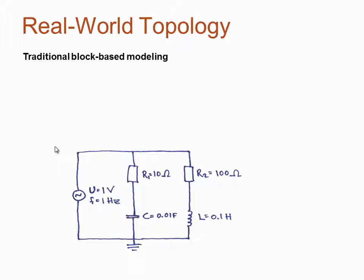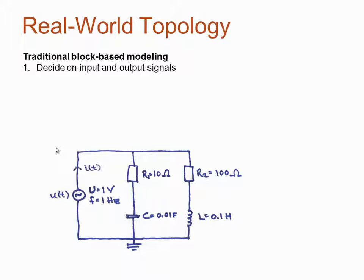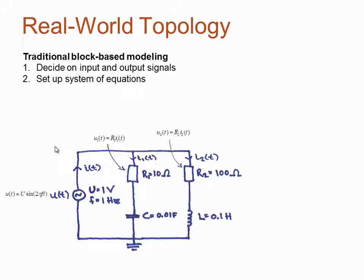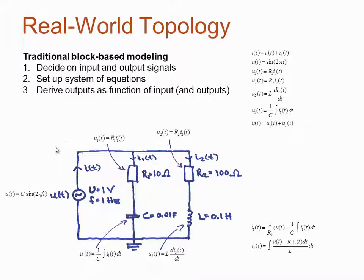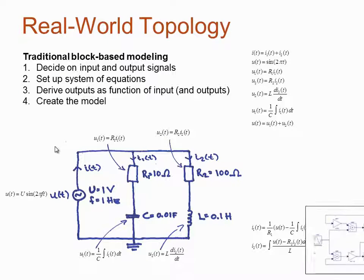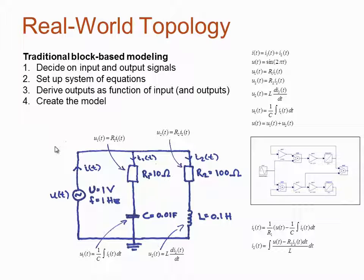Let's look at the first challenge: how to build models following real-life topology. To illustrate this, we will start by looking at an electric circuit. We will quickly look at how this would be modeled using a traditional block or algorithm-based modeling approach. The first step is to select inputs and outputs — in this case, a selection of voltages and currents. Then set up the system of equations by describing the equation of each component and applying Kirchhoff's second and first law. Once we have all equations, we can derive the outputs as functions of the inputs, and then use these equations to set up the block-based model. This is a rather complicated procedure to derive a relatively simple model, and it does not follow real-life topology either.